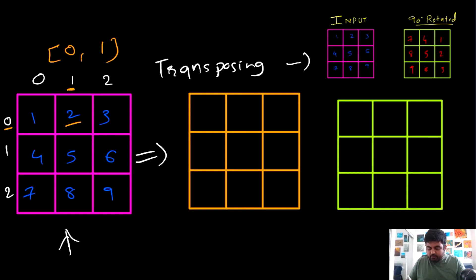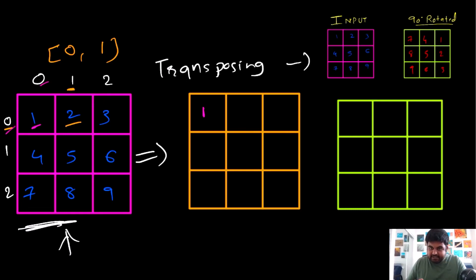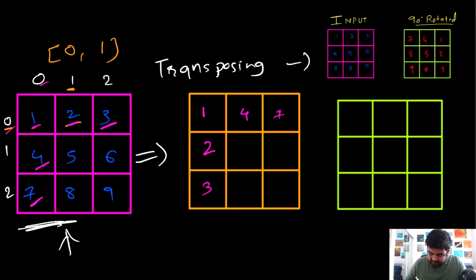First, we are going to transpose the original given input matrix and see the result. This 1 will remain at the same position because (0,0) is already correct. Now this 2 is going to be replaced by this 4 — so over here we would have 2 and over here we would have 4. This 3 is going to be replaced by 7 — so over here we would have 7 and over here we would have 3. If we just notice now, row 1, 2, 3 has been converted to a column, and column 1, 4, 7 has been converted to a row.